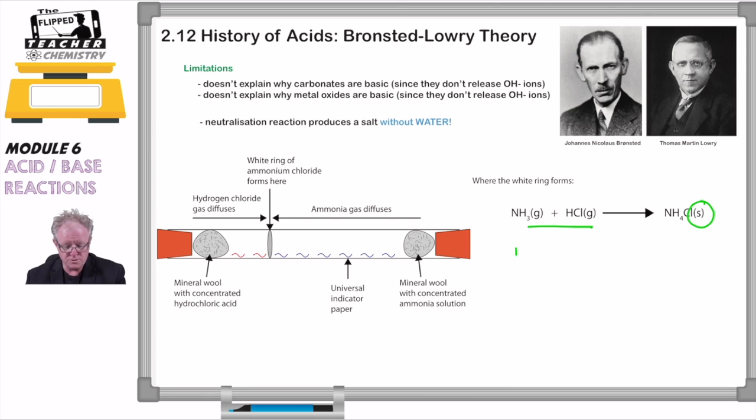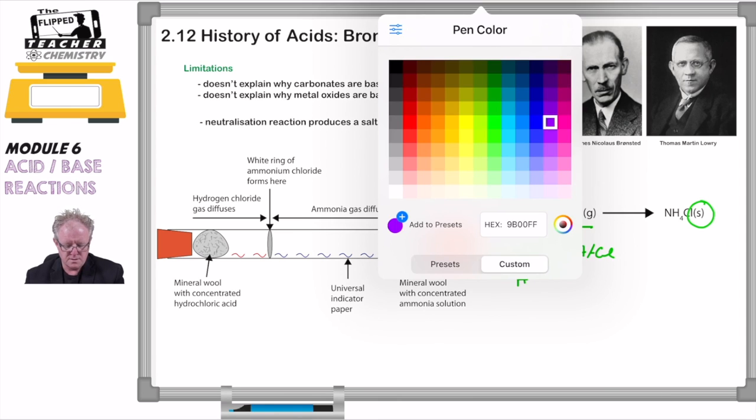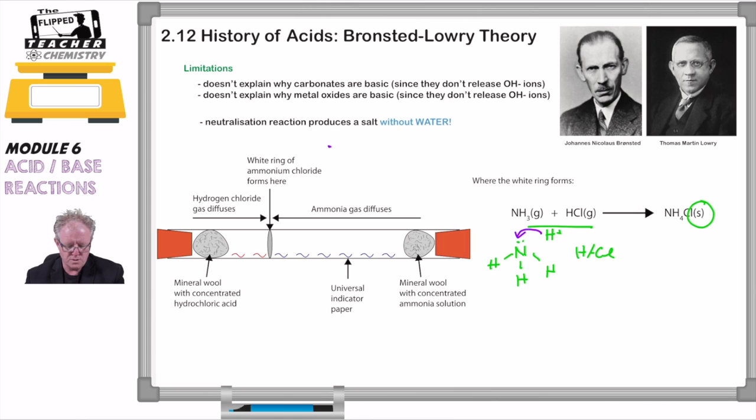So if I was to draw this, I'm going to draw this up like this. All right, so there's your ammonia. Here's your HCl. So when that bond breaks, you have a H+. There it is. And then that H+ gets picked up by the ammonia. You've got two lone pairs of electrons there.